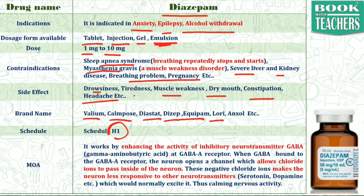Diazepam comes under the Schedule H1 drug category. Schedule H1 is recommended for doses which are prescribed by the doctor, and for drugs which are habit-forming. Since Diazepam is habit-forming, that is why it comes under Schedule H1.